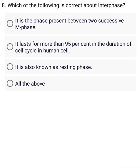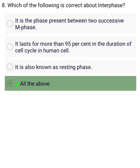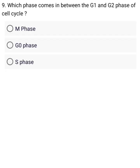A. It is the phase present between two successive M phases. B. It lasts for more than 95% of the duration of the cell cycle in human cells. C. Which phase comes in between the G1 and G2 phase of the cell cycle?